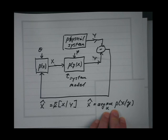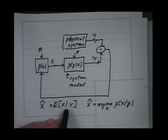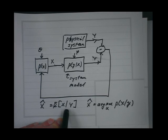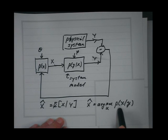MAP is much more computationally tractable than MMSE because MMSE requires computing a high-dimensional integral to compute expectations. MAP only requires an optimization, which is really easier to do.